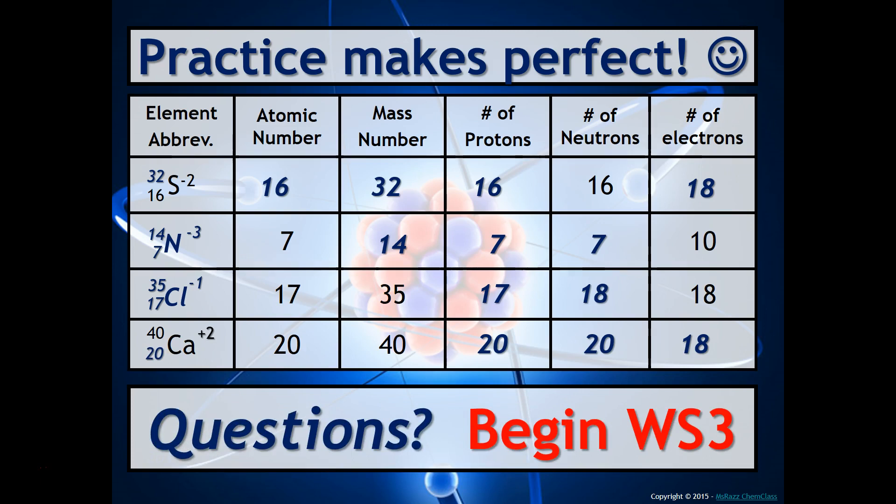Hopefully, this helped you to make a little bit more sense of the difference between ions and isotopes. Remember, isotopes, we were talking about the number of neutrons changing, but now with ions, we're focusing on the number of electrons changing. As always, you will need extra practice with this, so make sure that you did worksheet 3. Thank you so much for watching.